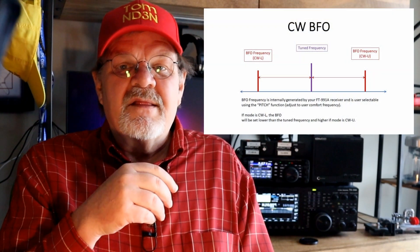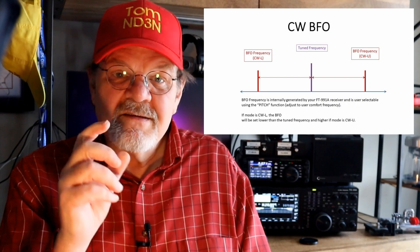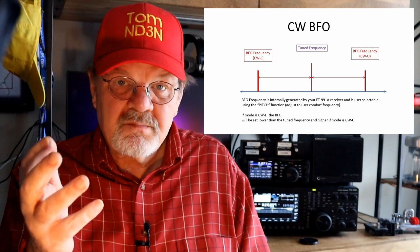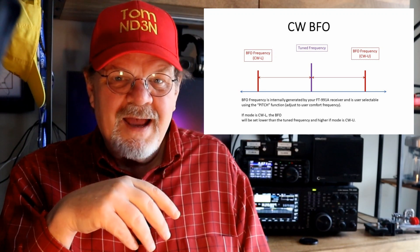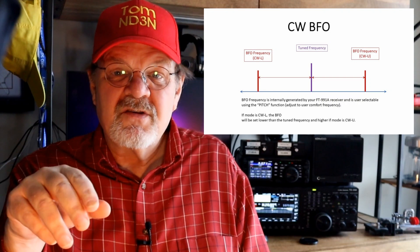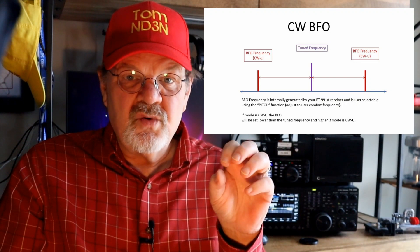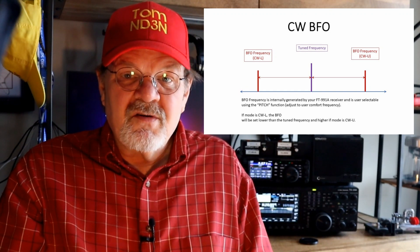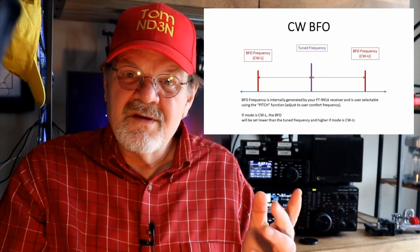I've put a series of graphics together that will hopefully explain why the label really doesn't matter. The beat frequency oscillator, or BFO, is activated when the received DSP senses a signal on the received side. The BFO produces the tone that you hear using the pitch function. I set mine at 750 hertz. Now on the FT-991A, you can select any frequency from 300 to 1050 hertz. If you've selected the CW lower mode, the BFO frequency will be lower than your tuned frequency.